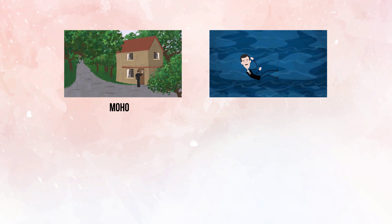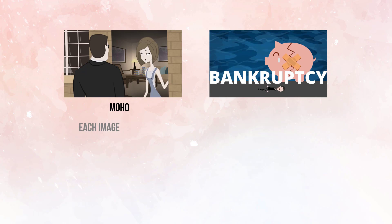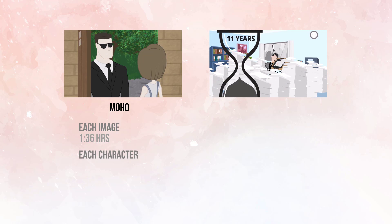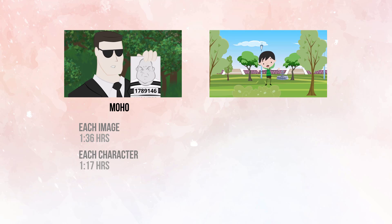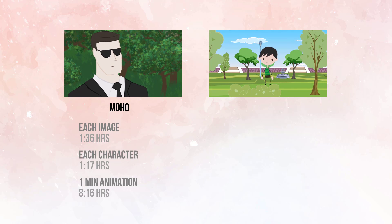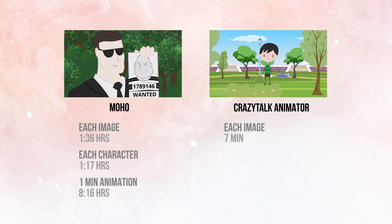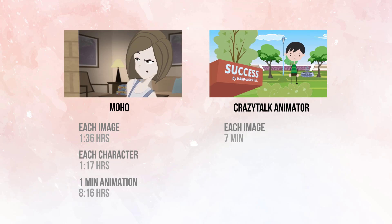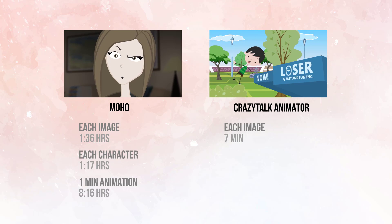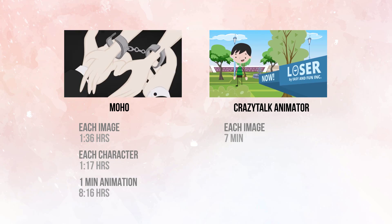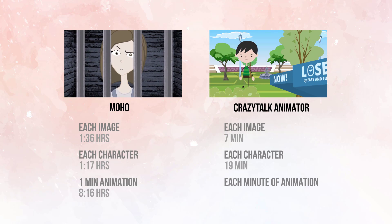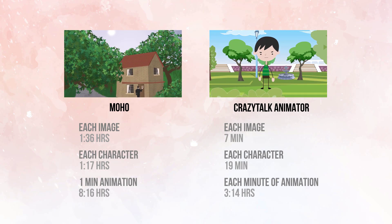Let me compare them side by side. Producing each image: in Moho Pro, one and a half hours on average; in Crazy Talk Animator, seven minutes. Preparing each character: one hour on average in Moho; 19 minutes in Crazy Talk Animator. And for one minute of animation: eight hours and 16 minutes in Moho, versus three hours in Crazy Talk Animator. That's insane.